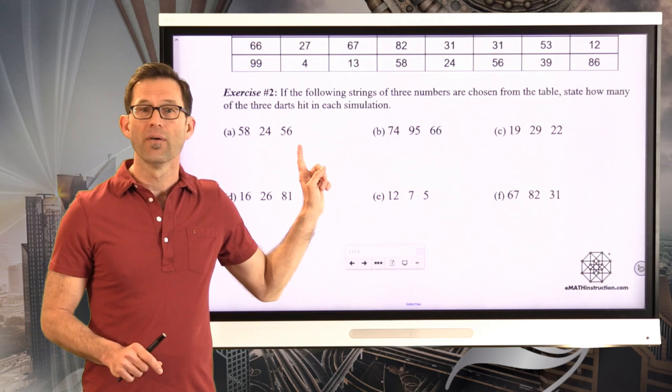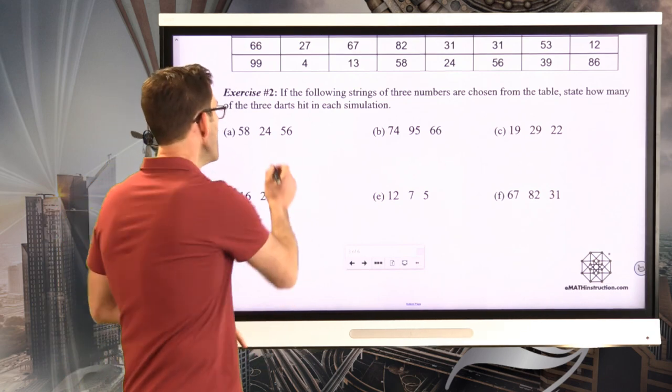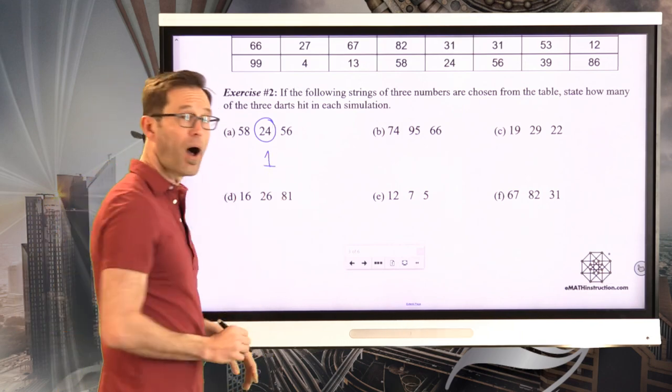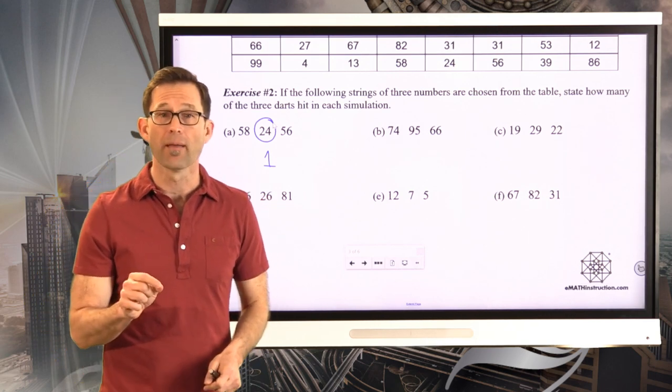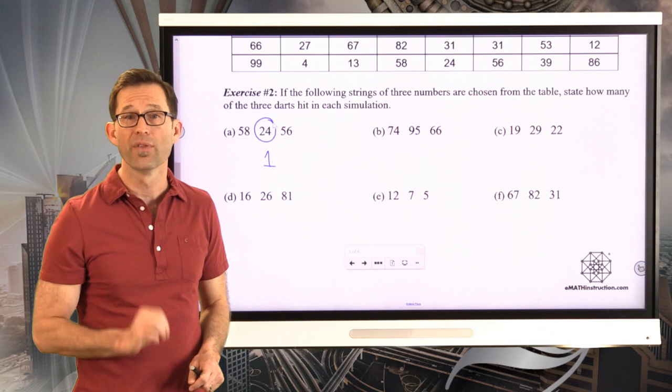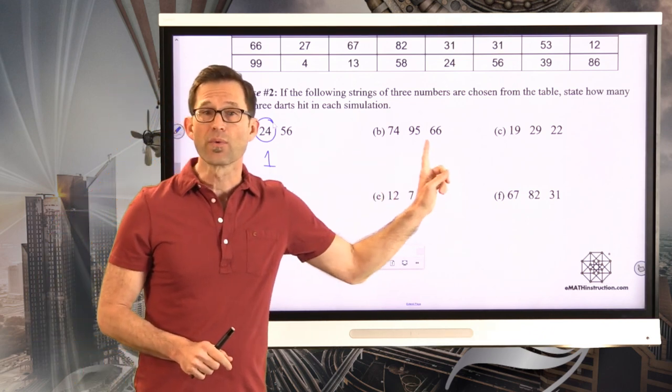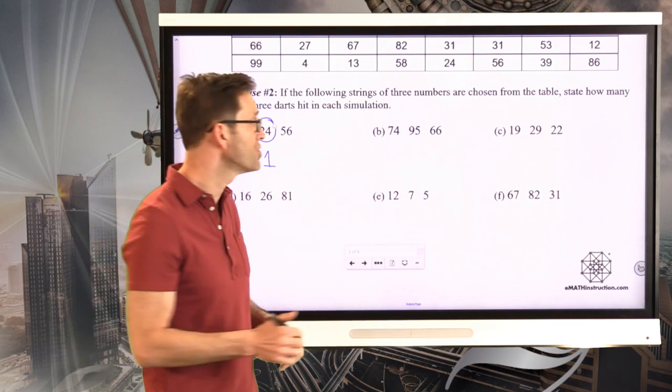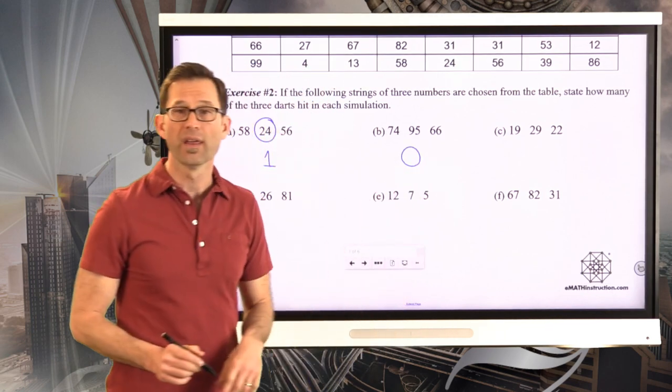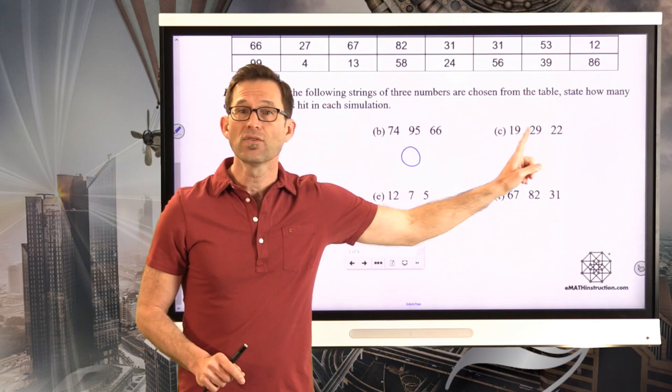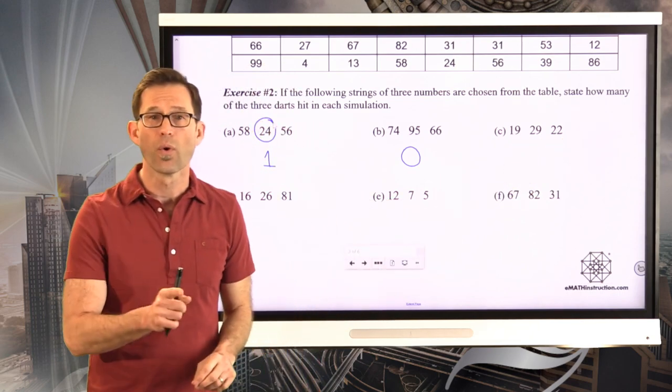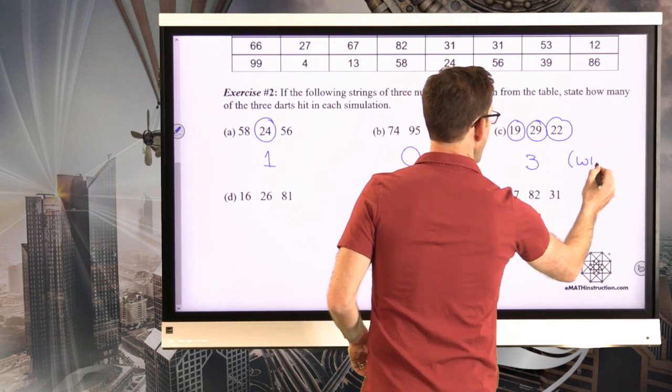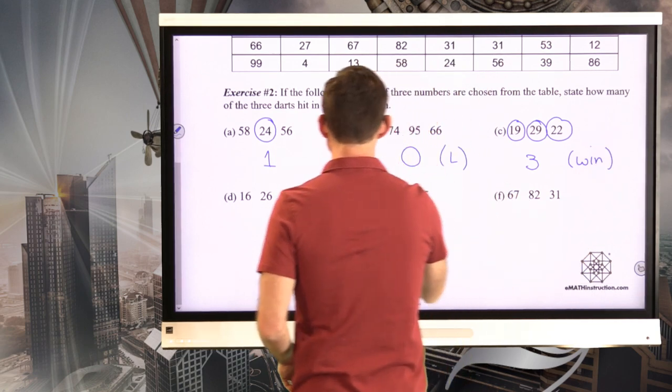So if I read these three numbers off of the table, 58, 24, 56, the only one of these that would be considered a hit would be one. By the way, I wouldn't win the game here. I'm only going to win the game if I get two of the darts in or three of the darts in. Well here, if I read these three numbers off, 75, 95, 66, none of them are within the 1 to 30 range. So that would represent zero darts that hit. Now here 19, 29, and 22, all of those are in the 1 to 30 range. All of these would represent hits. So there would be three, and by the way, that would represent a win.